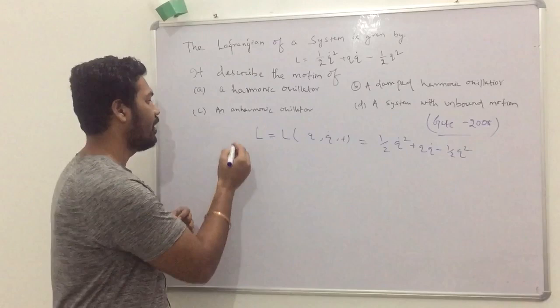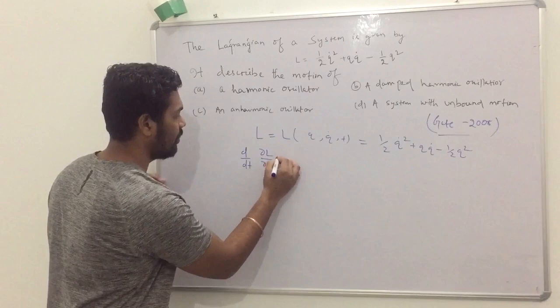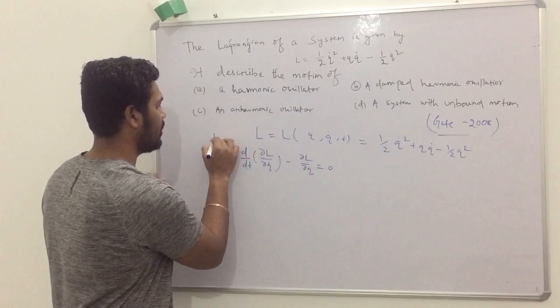The Lagrangian equation of motion can be found using the formula: d/dt of (∂L/∂Q̇) minus ∂L/∂Q equals zero. This is the Lagrangian equation of motion.